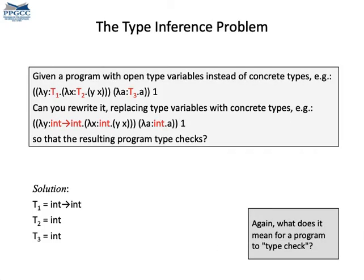Now we are ready to define the type inference problem. So, given a program with open type annotations, we want to be able to rewrite this program, assigning actual types to the type annotations, in a way that the resulting program type checks. So, when I say type annotations, I mean that these are like open variables and we need to fill up these open variables with actual types.